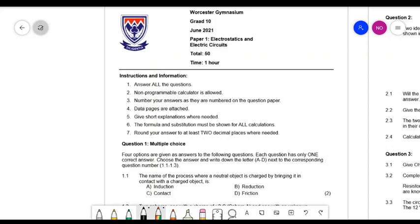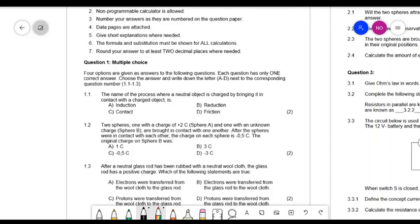Multiple choice: they say the name of the process where a neutral object is charged by bringing it in contact with a charged object. So when we have different processes to charge objects by bringing them in contact with a charged object, we call that contact or contact in English.